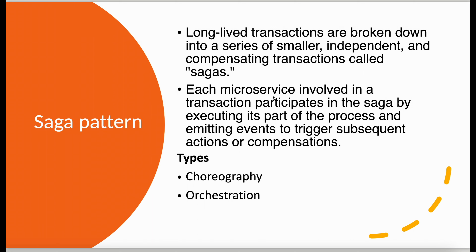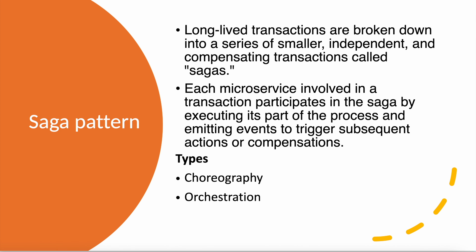For example, suppose we have 10 microservices involved and we know the steps: the first step is to verify the customer, the second is to deduct the payment, the third is to create the order, and the fourth is to send a notification to the vendor. Once the first step is completed, the customer service knows what the next step should be and triggers the further request. There are two types of saga patterns: choreography and orchestration.